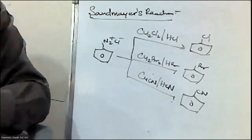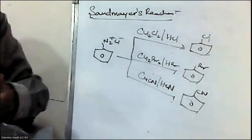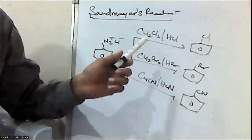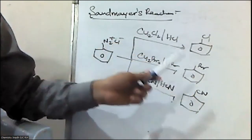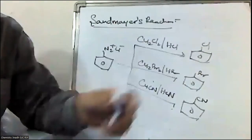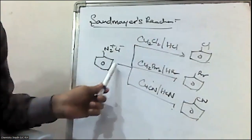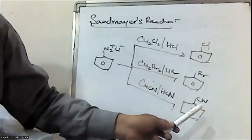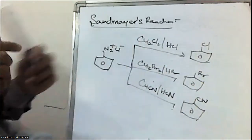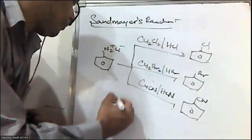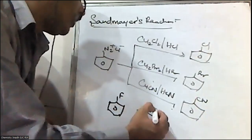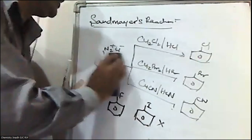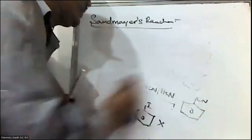When benzene diazonium chloride reacts with cuprous chloride/HCl, cuprous bromide/HCl, and cuprous cyanide/HCl, it forms chlorobenzene, bromobenzene, and cyanobenzene respectively — this is called Sandmeyer's reaction. Note that fluorobenzene and iodobenzene cannot be prepared by Sandmeyer's reaction.